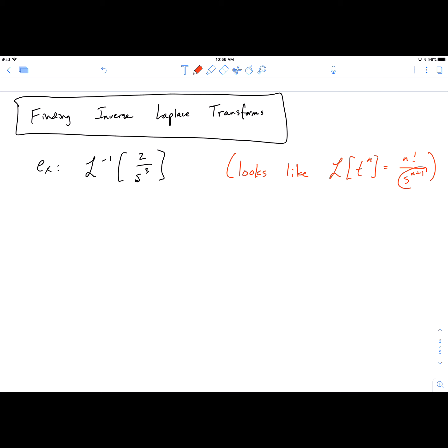So you look at this s to the n plus 1, and you notice that there, which tells you that n has to be 2. So what you're thinking is that this is going to look like t squared.